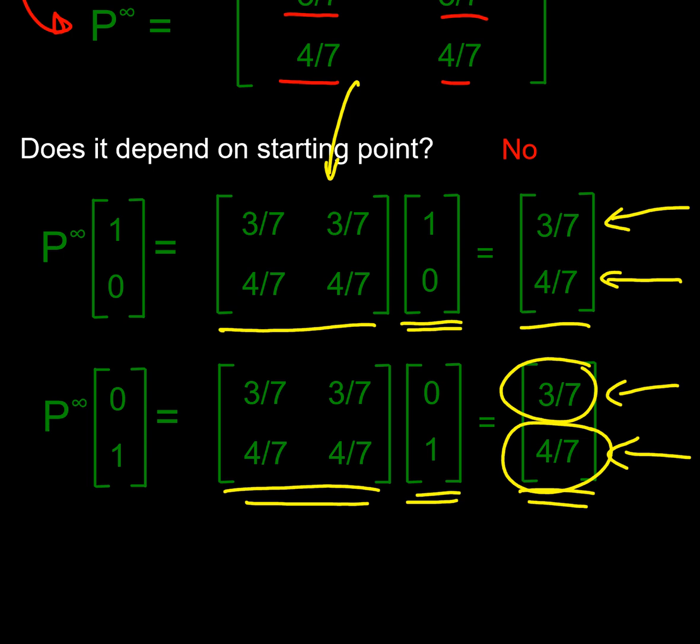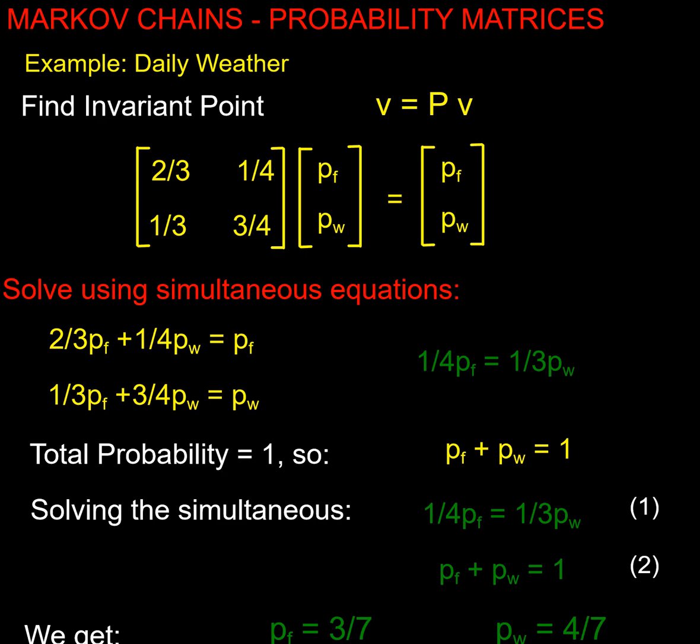So I've actually worked out something generally about the weather - in the long term three sevenths of the days are fine and four sevenths of the days are wet. Let's see if we can connect that with stuff we already know. Let's think about it as an invariant point. So how do I do an invariant point? Well if I take my initial vector and I multiply it by my matrix, I get back to my same vector. If I write them as two simultaneous equations I get these two equations. You might have noticed, or if you do a bit of rearrange, they both become the same equation: one quarter of pf must equal one third of pw for the invariant point.